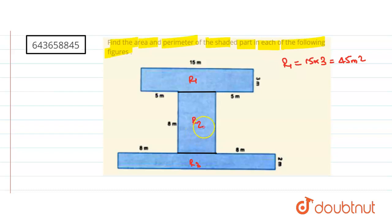Now what about R2? See, this is 5, this is 5 and total distance is 15, therefore this is also 5. So what about R2? R2 is equal to what? This is 8 into 5, this is nothing but 40 meter square. So R2 we have 40 meter square.